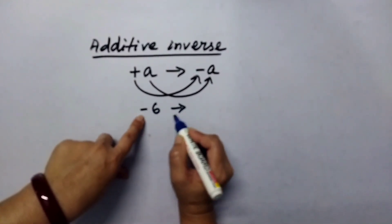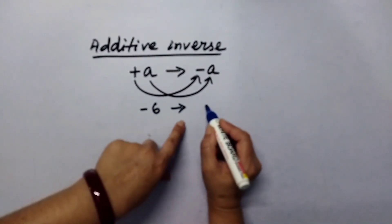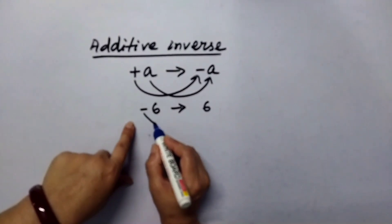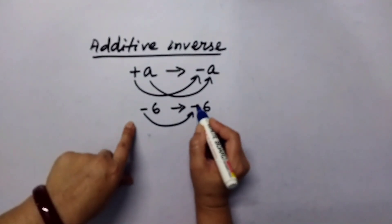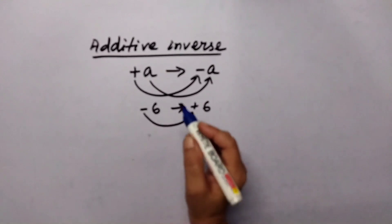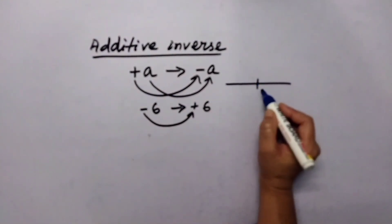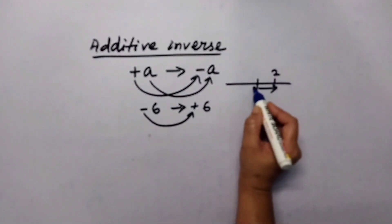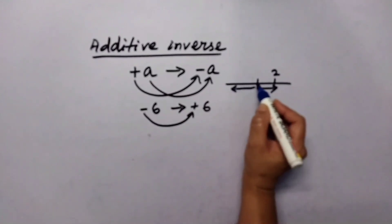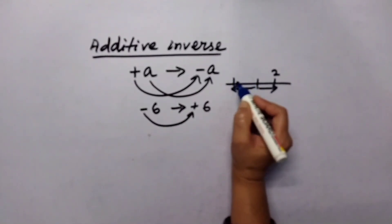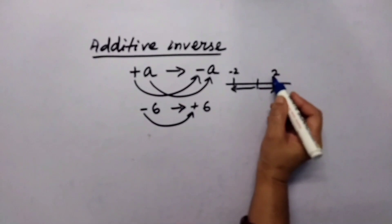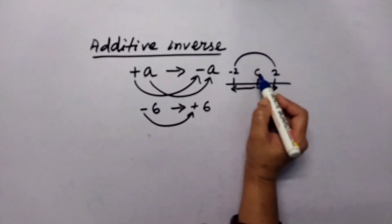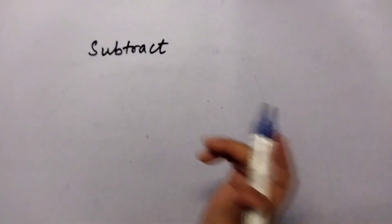Let us take one example: negative six. Its absolute value is six — don't change the absolute value. The additive inverse should be positive six. On the number line, however far you move to the right, move that same distance to the left — that number is its additive inverse. When you add these two numbers you always get zero.